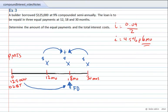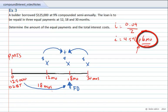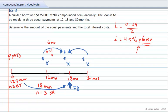To write the equation of value, we look at how much time each amount travels to reach the focal date. The $125,000 debt moves from 0 to 18 months — that's 18 months, or N equals 3 semiannual periods. The first payment of X dollars is made at 12 months and must move to 18 months — that's 6 months, which is exactly N equals 1 semiannual period.